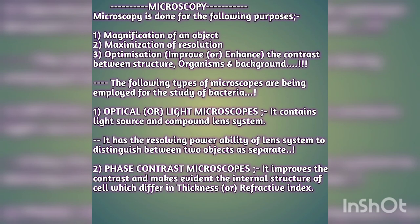The three main purposes of microscopy are: first, magnification of an object; second, maximization of resolution; and third, optimization — which means improving or enhancing the contrast between the structure or organism and its background. These are the three important purposes of microscopy. Now let's study the different kinds of microscopes used for the study of bacteria beyond the compound microscope.